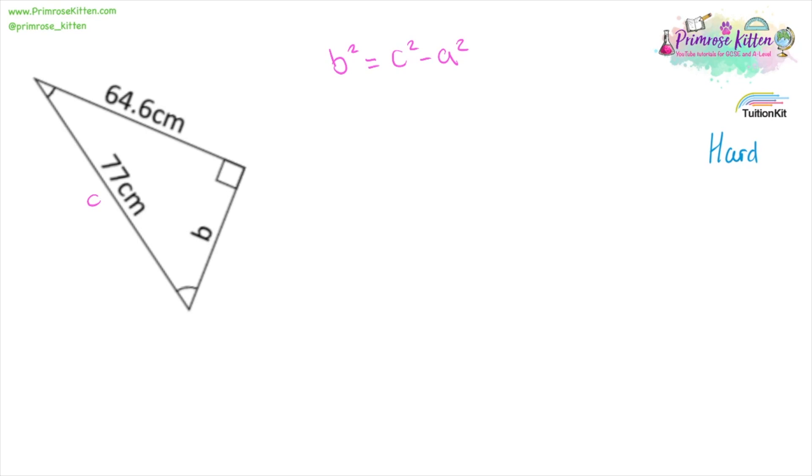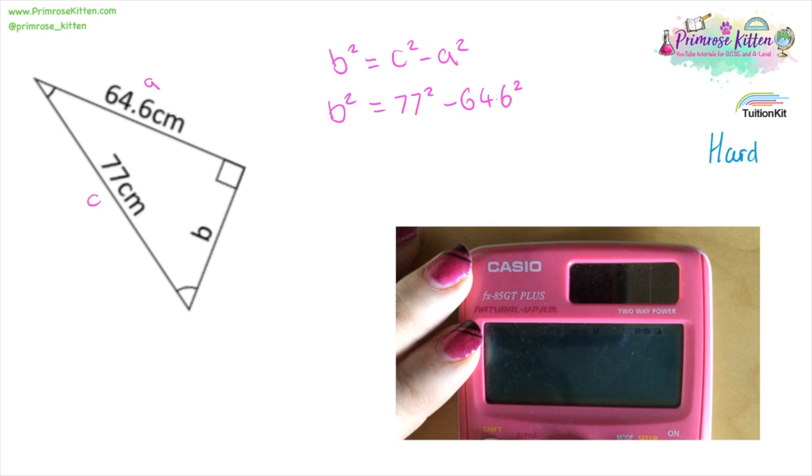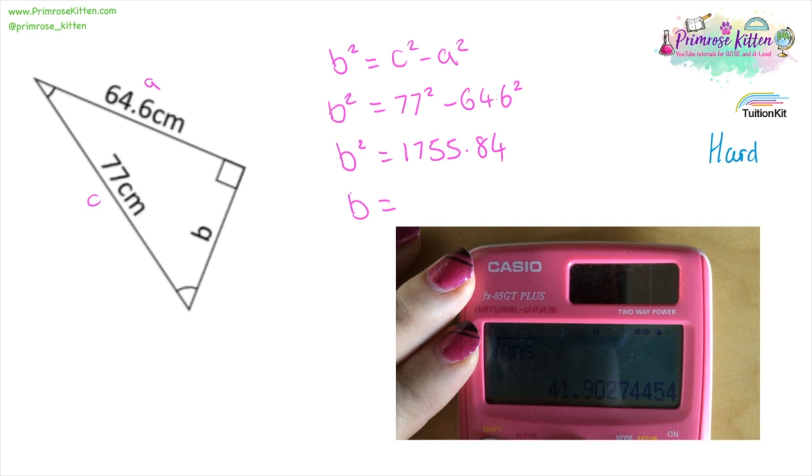Slightly harder one now involving some decimals. We need to be a bit more careful with what we are doing. B squared equals C squared, 77 squared, minus 64.6 squared. If you're confident with your calculator, this is the sort of thing you can type straight into your calculator, and we are going to be saving ourselves a lot of time doing that. So B squared is 1755.84 and B is 41.9.